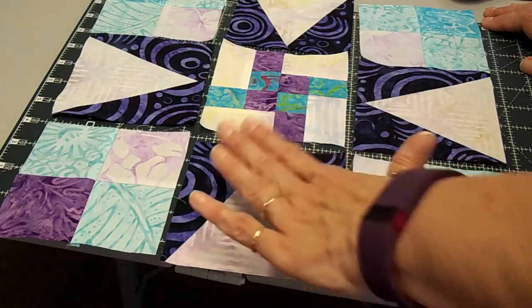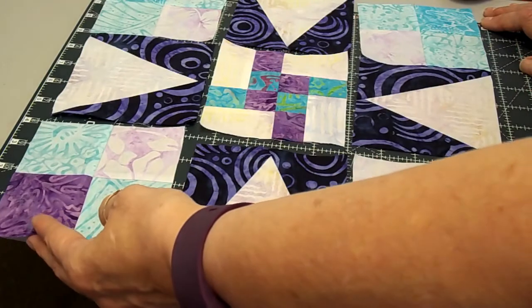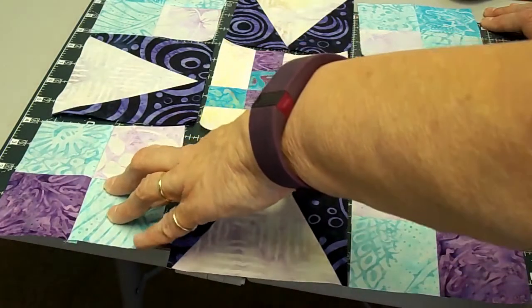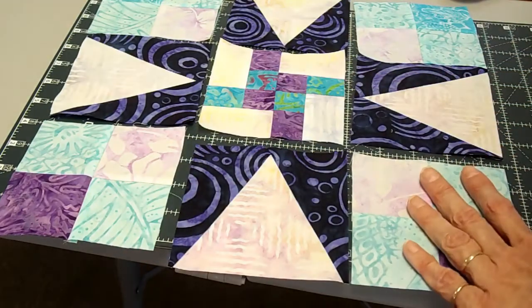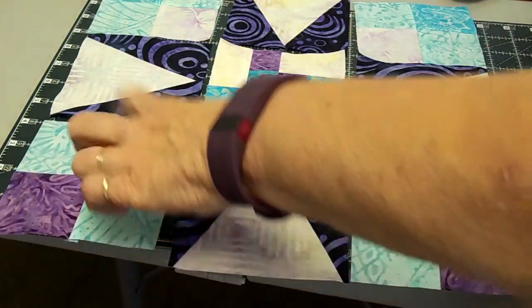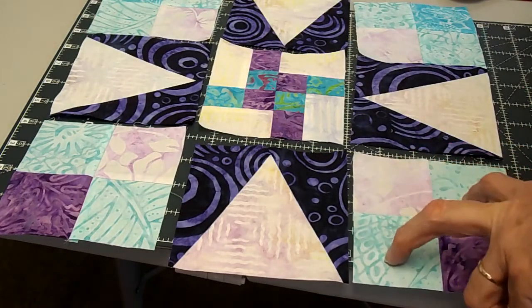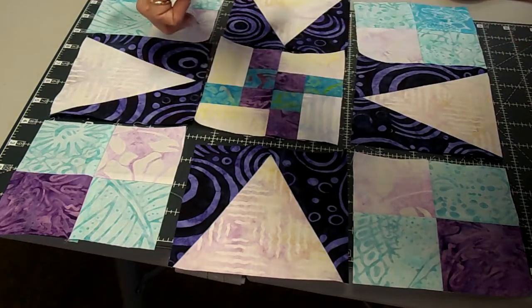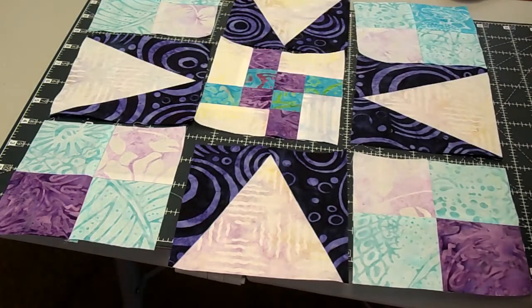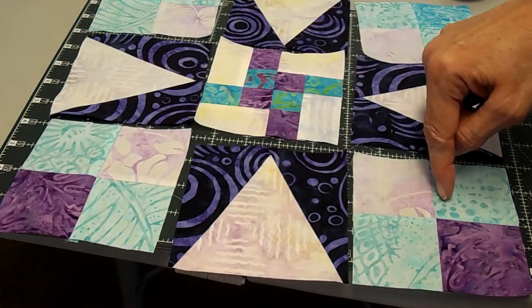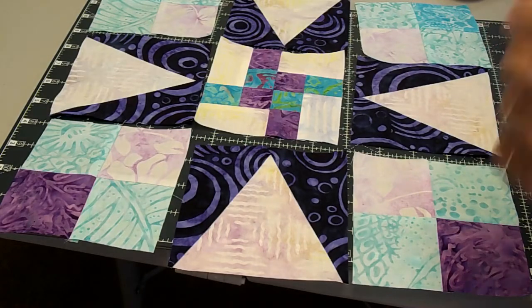Here are the four star points that we made in the last step, and the only other thing you need to do is make four patches. As you look at this, you can tell that these four patches are not the same. You have two of these and two of these, and then you're just going to put them together into a nine patch.